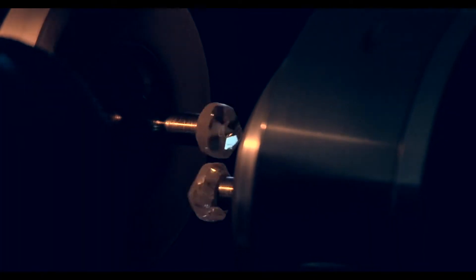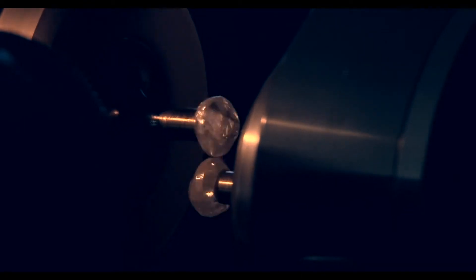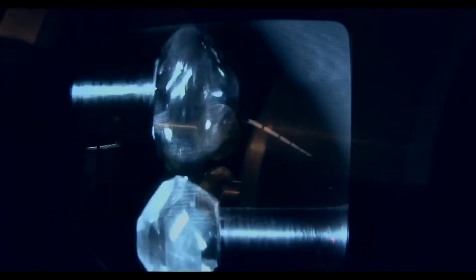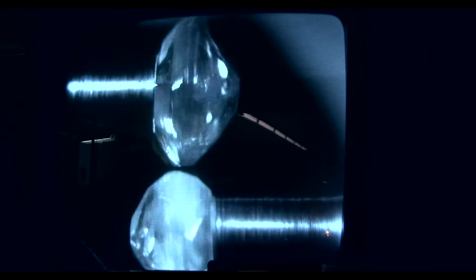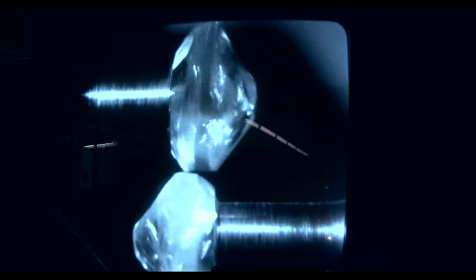The next stage in the process is to make the diamond round. This is done using a bruting machine. Two diamonds are turned against each other to make the diamond round in shape.